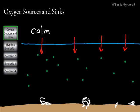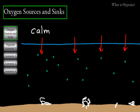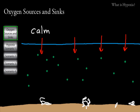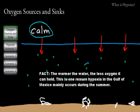In order to understand hypoxia, let's start with understanding some ways that oxygen is produced and consumed — we'll call those sources and sinks of oxygen. First, let's consider a calm day on the Gulf of Mexico. We have a relatively flat sea, and the green dots here we'll consider as algae or phytoplankton in the water.